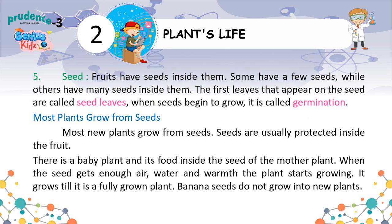Seed. Fruits have seeds inside them. Some have a few seeds, while others have many seeds inside them. The first leaves that appear on the seed are called seed leaves. When seeds begin to grow, it is called germination. Most plants grow from seeds. Seeds are usually protected inside the fruit. There is a baby plant and its food inside the seed of the mother plant. When the seed gets enough light, water and warmth, the plant starts growing. It grows till it is a fully grown plant.